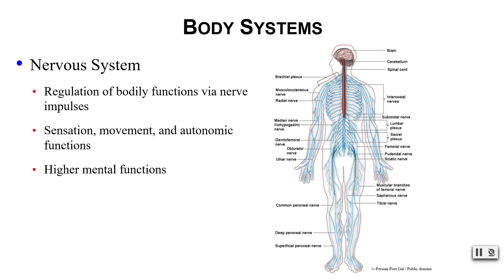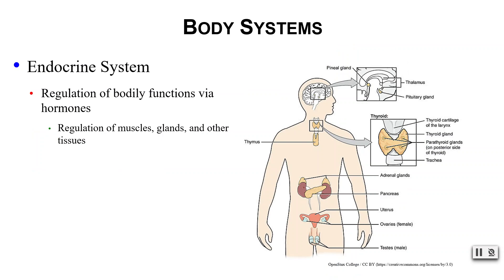Your nervous system regulates overall bodily functions via nerve impulses. It's involved in sensation and movement, autonomic or automatic functions, and higher mental functions. Your nervous system is a very fast-acting regulatory system, as opposed to your endocrine system. Your endocrine system is also regulatory, but uses hormones instead of nerve impulses to regulate muscle function, gland function, and other tissue function — and it is a much slower-acting system.